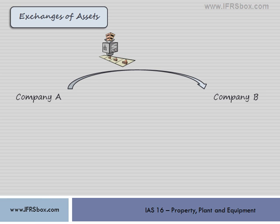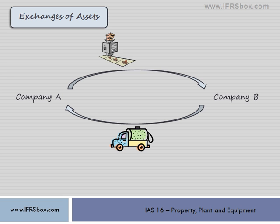Company A sells a machine to Company B in exchange for a lorry, but Company A shall pay an additional €10,000 to Company B. In this case, the cost of the acquired item shall be measured at its fair value, but only if the transaction does have commercial substance and the fair value is reliably measurable.